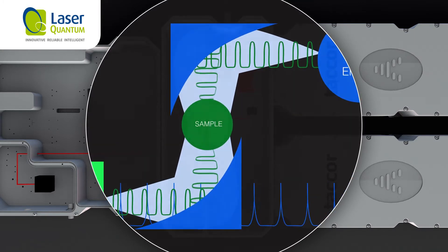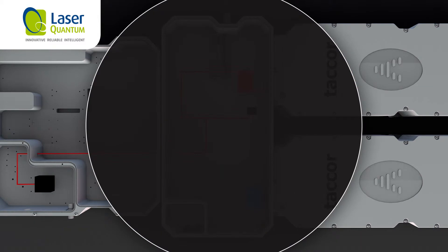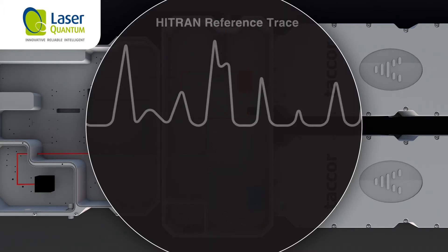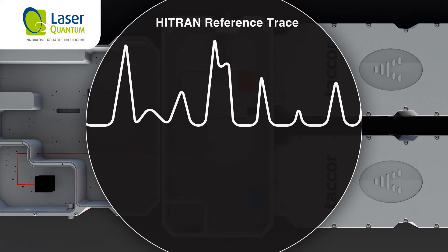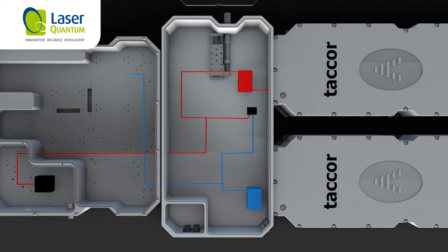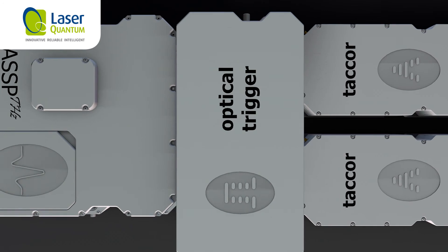The terahertz pulse is focused onto a sample. After interaction with the sample, the resultant reflected or transmitted terahertz wave is mapped by interaction with the probe pulses in an electro-optic crystal. A Fourier transform converts the sample response into the frequency domain.